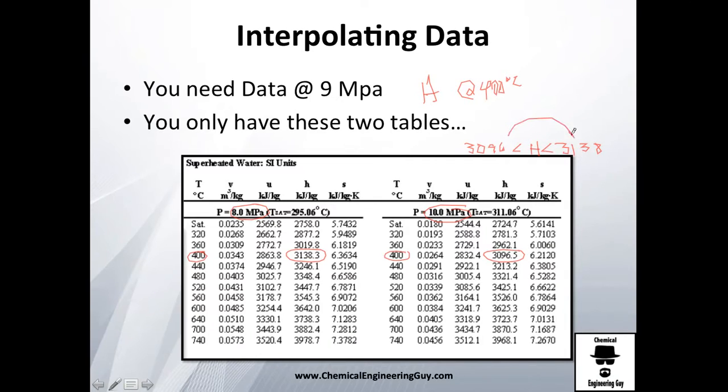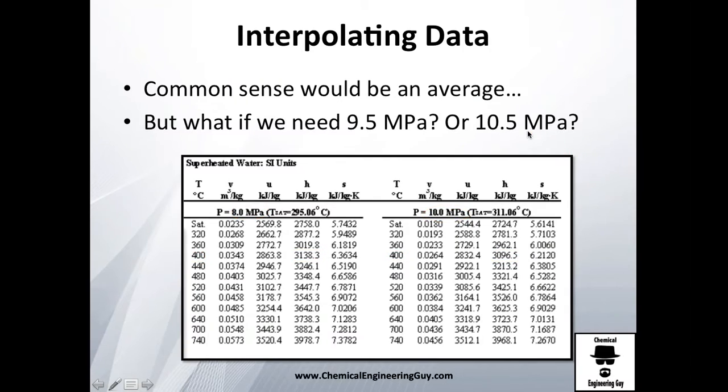The entropy will be here. So you have values 3196 and that will be 3138. So you know it's between these values because of course 9 is between these numbers: 10 MPa, 8 MPa, 9 MPa. And actually, the most common sense will be let's make an average.